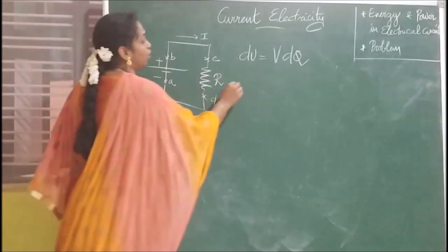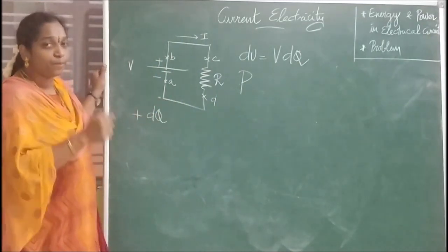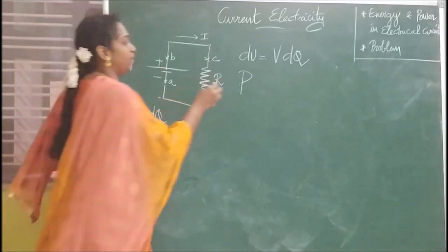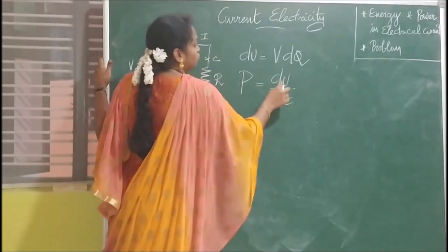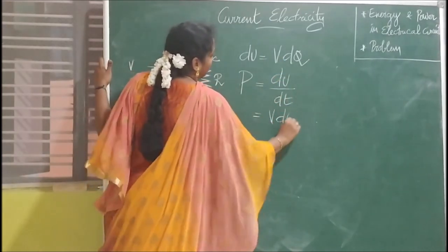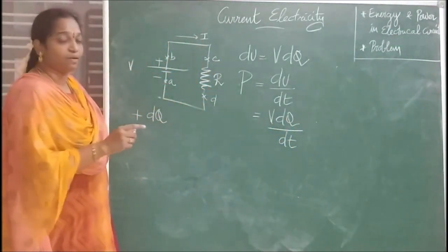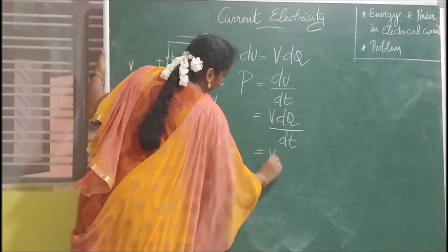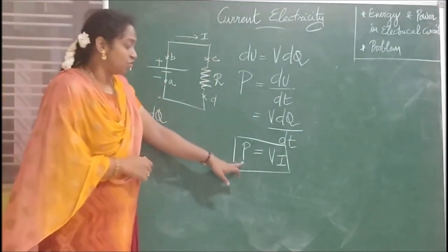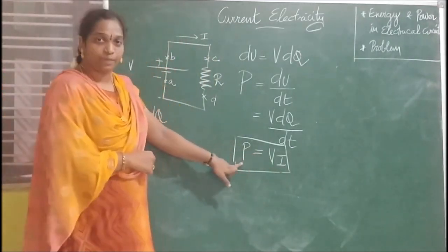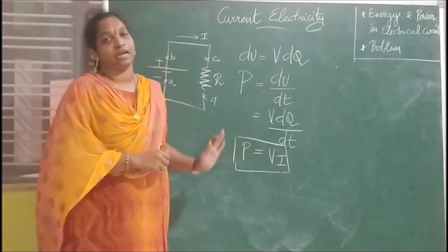Now we are going to derive it. We represent electric power with the symbol P — the power delivered to a network. P is equal to dU divided by dt. Since dU = V·dQ, we get P = V·dQ/dt. We know that the rate of change of charge with time is current. Therefore, P is equal to VI.